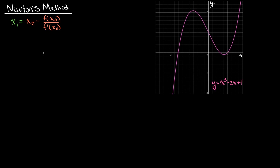In the last video, we were applying Newton's method to approximate a root of a function, and towards the end of the video, I showed you that Newton's method has a weakness to it. In this video, I want to go over a few weaknesses of Newton's method. This isn't to scare you away from using it — you saw just how good of an approximation Newton's method can give you. But knowing some of its weaknesses can help us be wiser in applying it and be cognizant of some ways that it could fail.